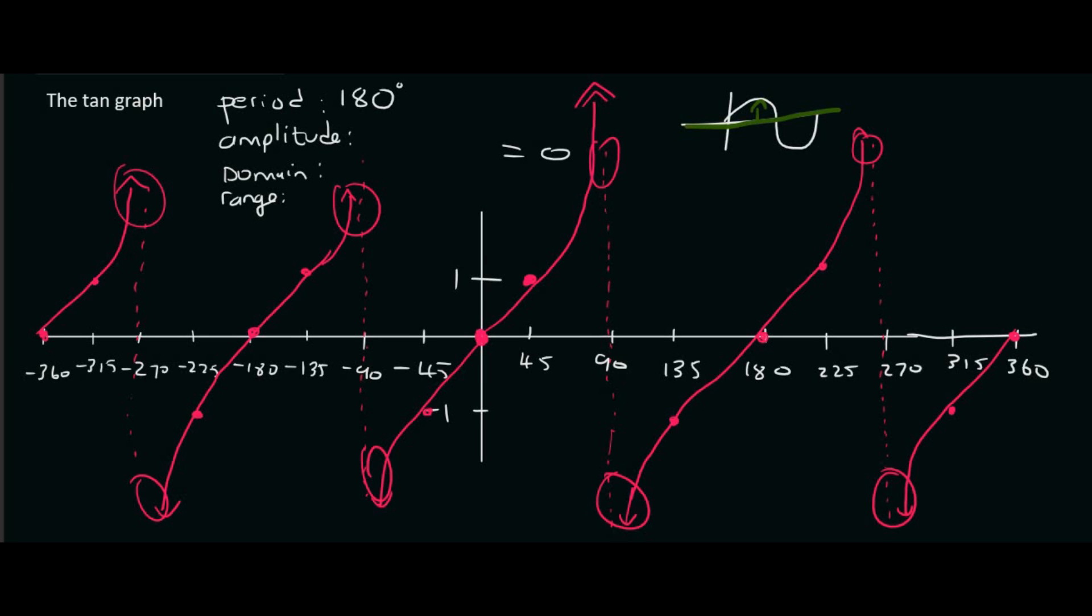These arrows are trying to tell us that this thing just keeps going up, up, up, up, up. Or it keeps going down, down, down. So the amplitude does not exist. So we can just say NA, not applicable.